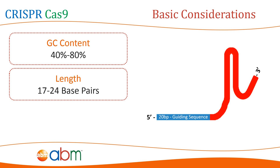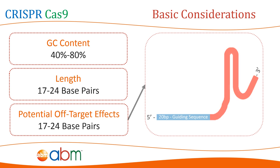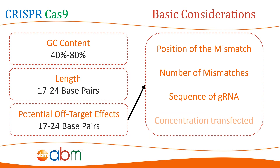17 base pairs is the lowest limit on the length of the guiding sequence. Any sequence shorter than 17 has a statistical chance of targeting multiple genomic loci. 3. Potential off-target effects. Mismatch tolerance between the gRNA and target site is what leads to off-target effects of the CRISPR-Cas9 system and in general they depend on: 1. Position of the mismatch, 2. Number of mismatches in any given gRNA, 3. The sequence of the guide RNA, and 4. Concentration of the gRNA and Cas9 transfected.